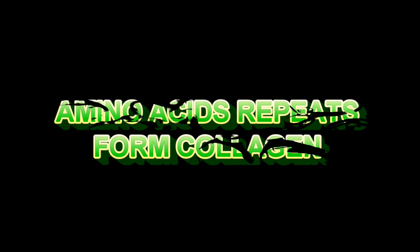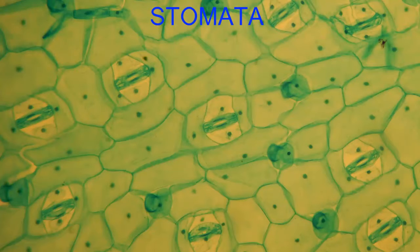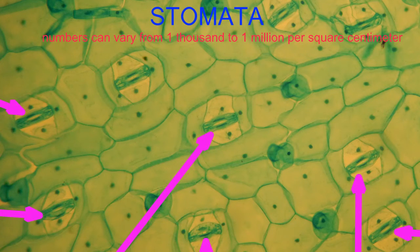In a square centimeter of a plant leaf, one could find between a thousand and up to a million openings, known as stomata, or in singular, stoma.